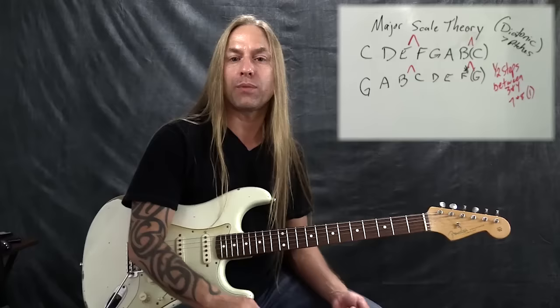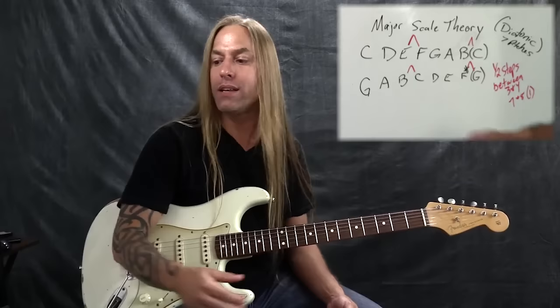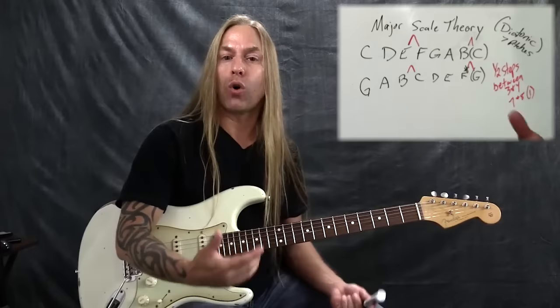So the key of G has one sharp — F sharp. You might have known that if you've learned piano. But now you know why. The key of G has an F sharp, and now it's set up as Do, Re, Mi, Fa, Sol, La, Ti, Do.